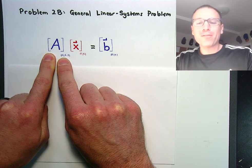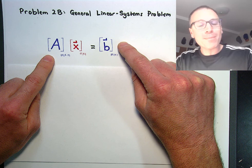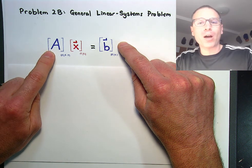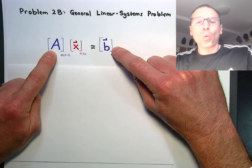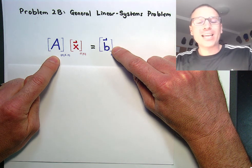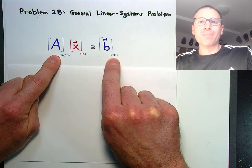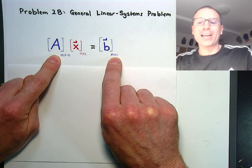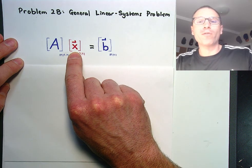Remember from a previous video that we defined the general linear systems problem as starting with a given matrix, a matrix that arises from a modeling context, and a given right-hand side vector where the matrix may be rectangular and not square, and the row dimensions of the matrix matches the row dimension of the right-hand side vector. In that situation, we're on our search for the unknown vector x.